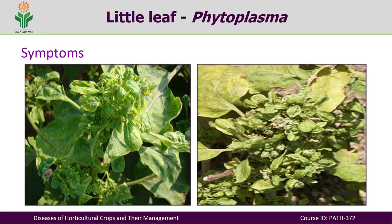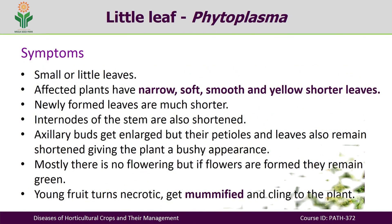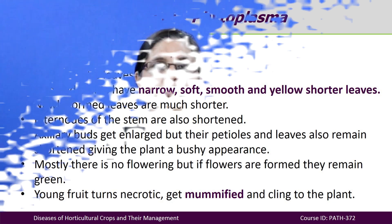Looking at the symptoms, the leaves are very small, and newly formed leaves are much shorter. The internodes become shortened, axillary buds get enlarged, but petioles and leaves also remain shortened, giving the plant a bushy appearance. Mostly there is no flowering, and if flowers are formed they remain sterile. Young fruits turn necrotic, get mummified, and cling to the plant. This is the full range of symptoms, making it easy to diagnose little leaf of brinjal.